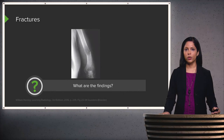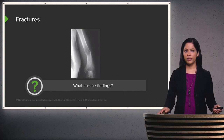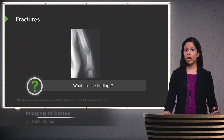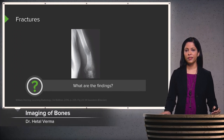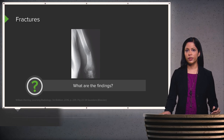Let's talk about bony abnormalities and fractures. Of all the different x-rays that you look at, fractures are probably one of the most commonly encountered findings. Let's start off with this case. Take a look at the findings here and keep this in mind as we go through the lecture, and then we'll come back to it at the end.